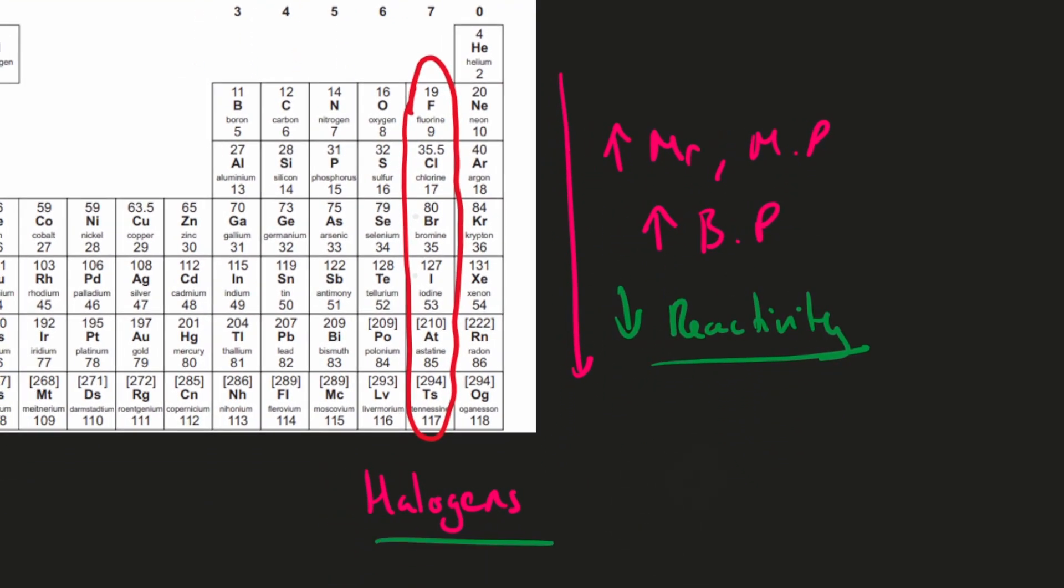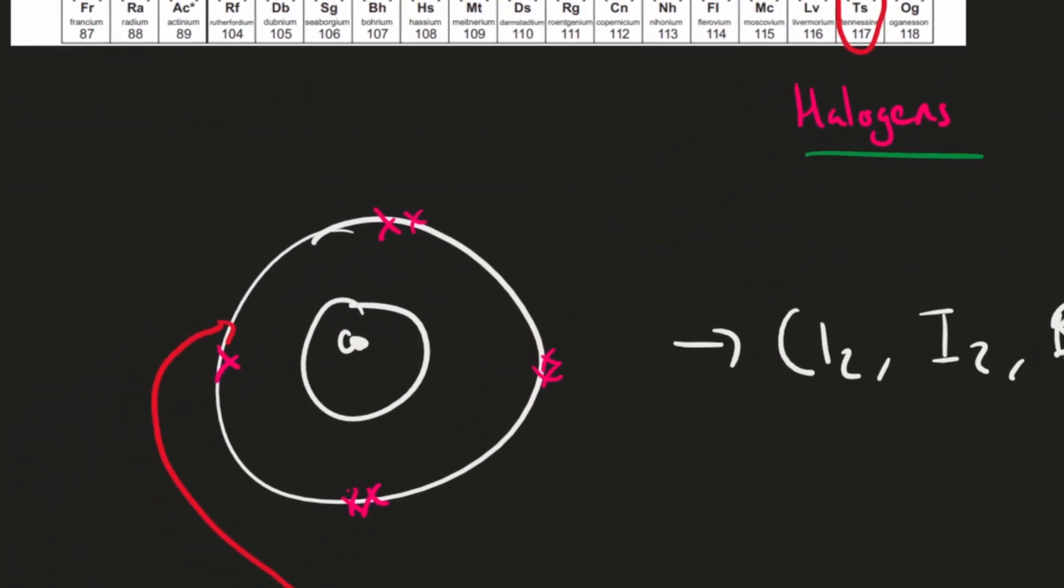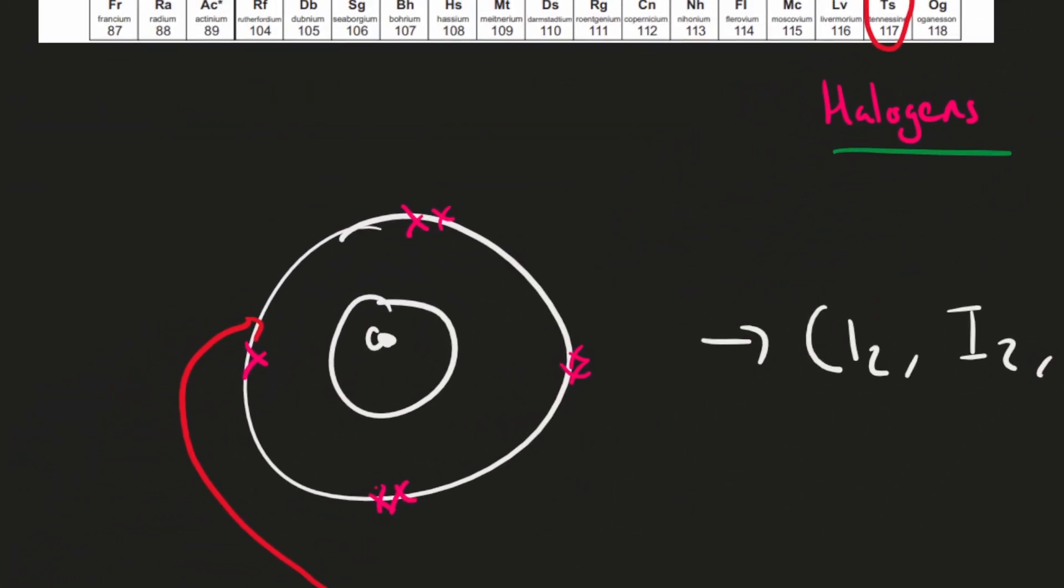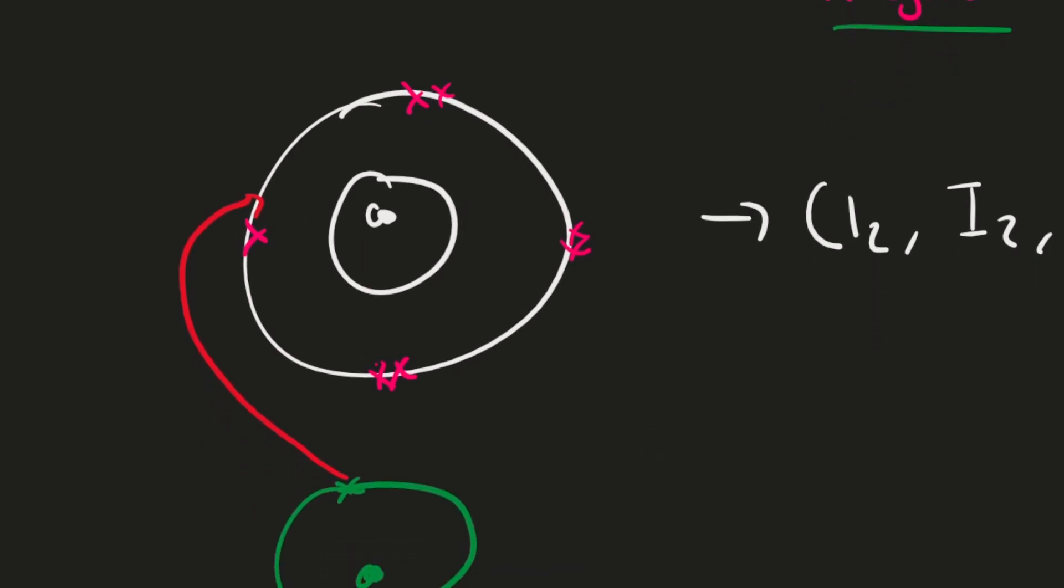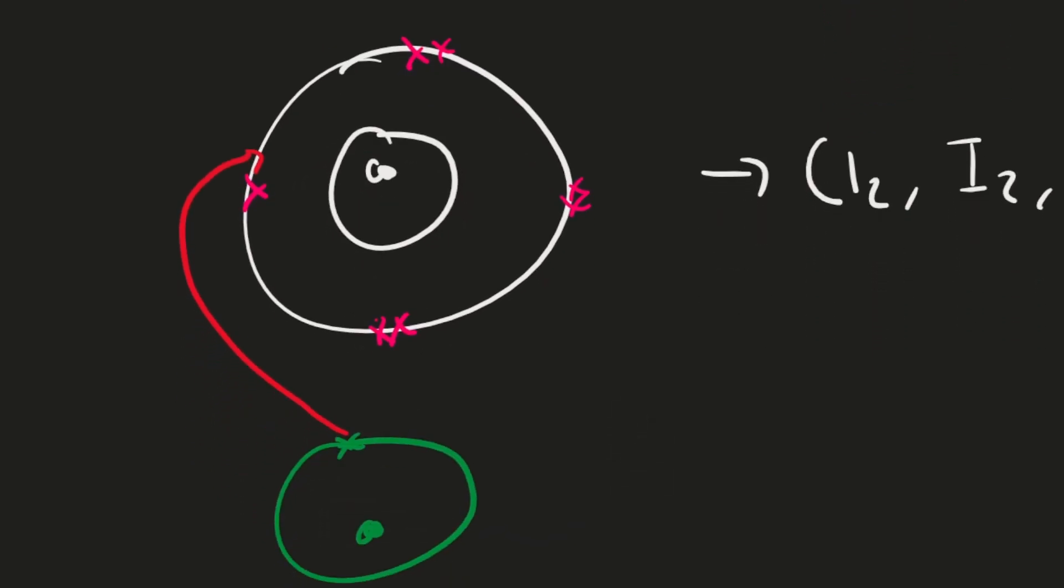So Group 7 atoms we also call halogens, and they all have the same structure. No matter whether it's chlorine, iodine, bromine, or whatever, Group 7 elements always have the same outer shell structure. They have 7 electrons in the outer shell, and to react they always want to gain an electron to form a full outer shell. So their reactivity depends on how easily they can gain this outer shell electron.